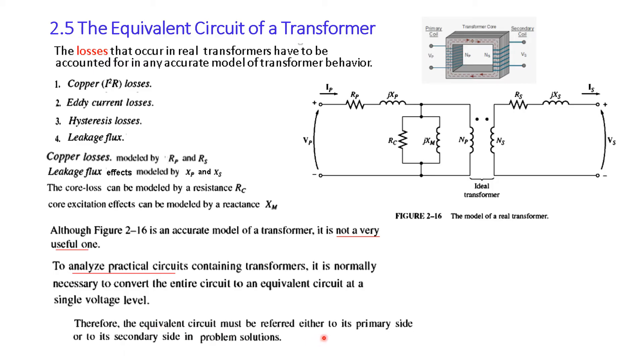Therefore the equivalent circuit must be referred to either the primary side or to its secondary side in the problem. So one option is that we reflect this into the primary side. Reflect this means whatever is the effect of this transformer or this secondary side will show it on the primary side. And similarly, if you want to reflect the primary side on the secondary side, then its effect will be shown here.